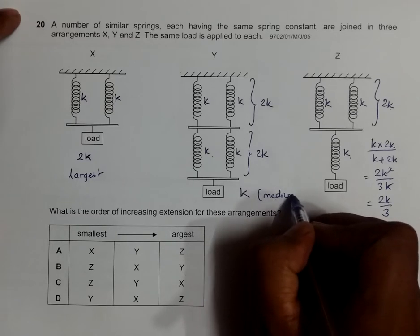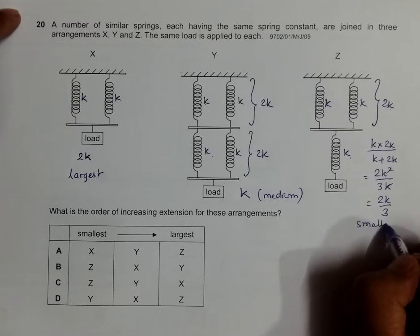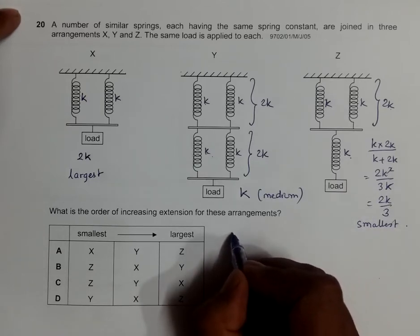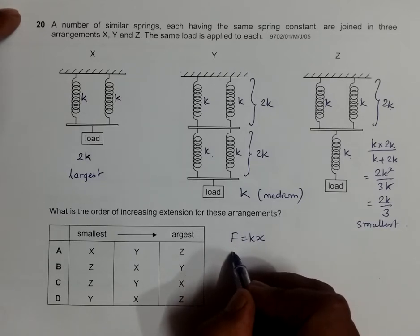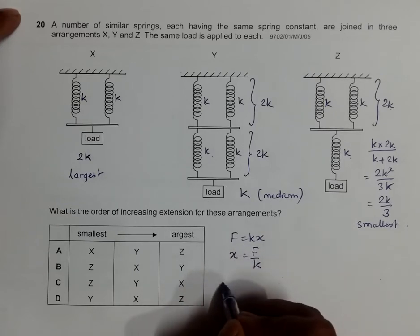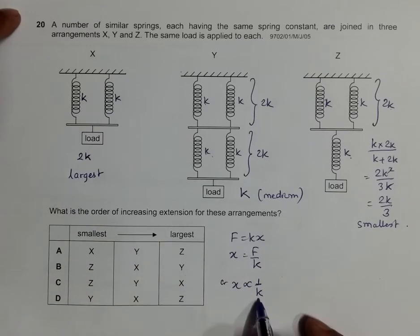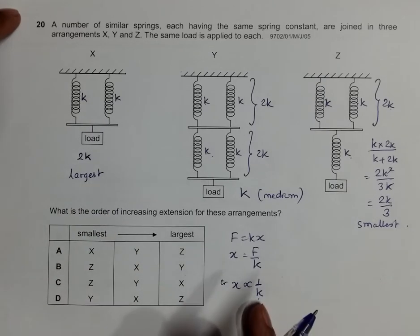As you know, since F is equal to K times X, we must have X is equal to F by K. So X is proportional to 1 by K. So largest K means smallest X. Largest K means smallest X.